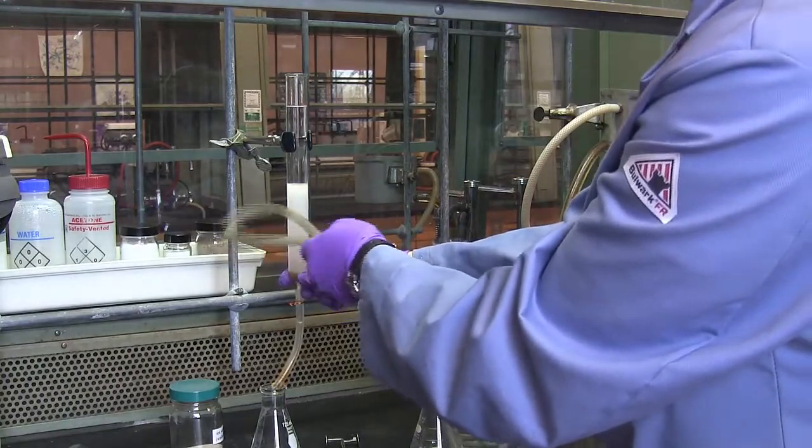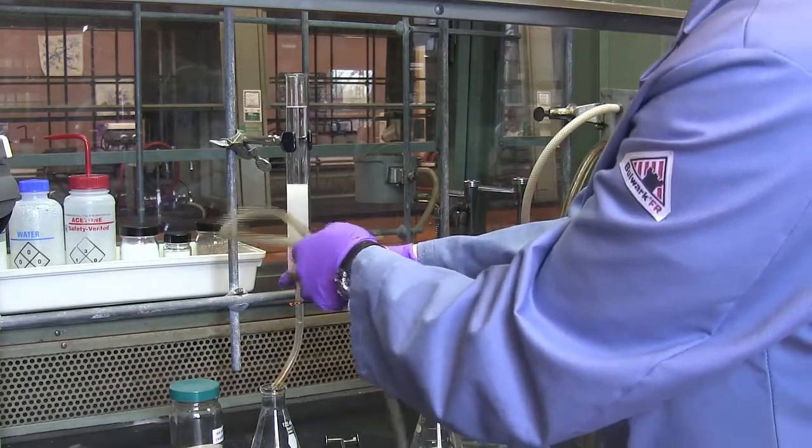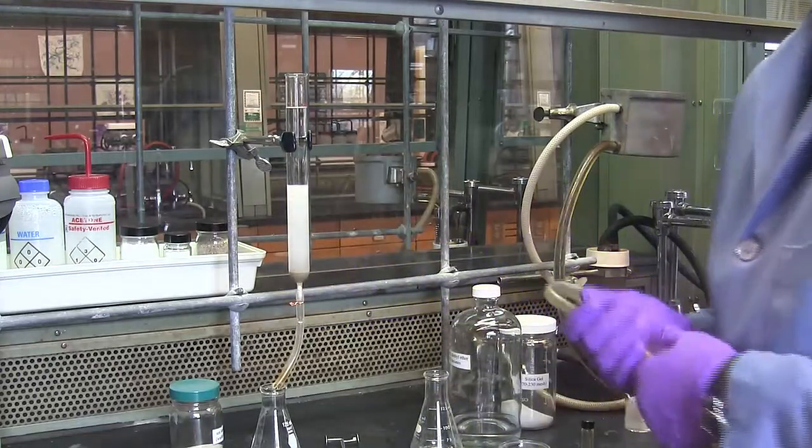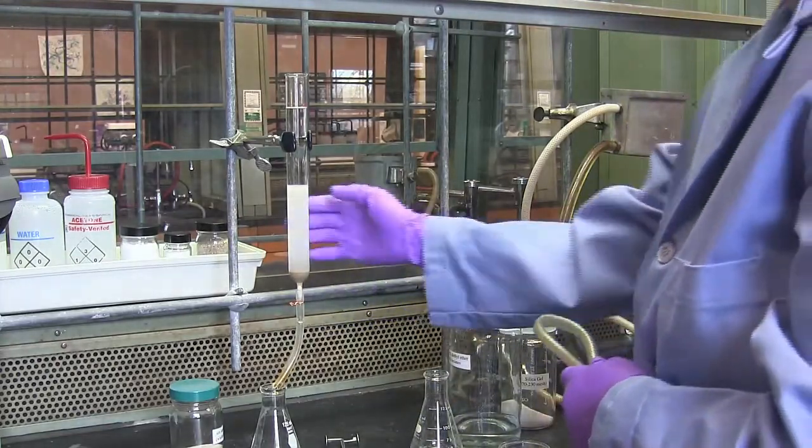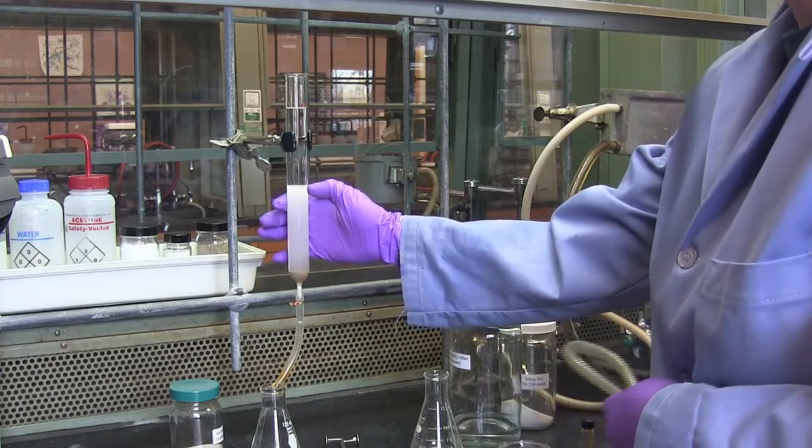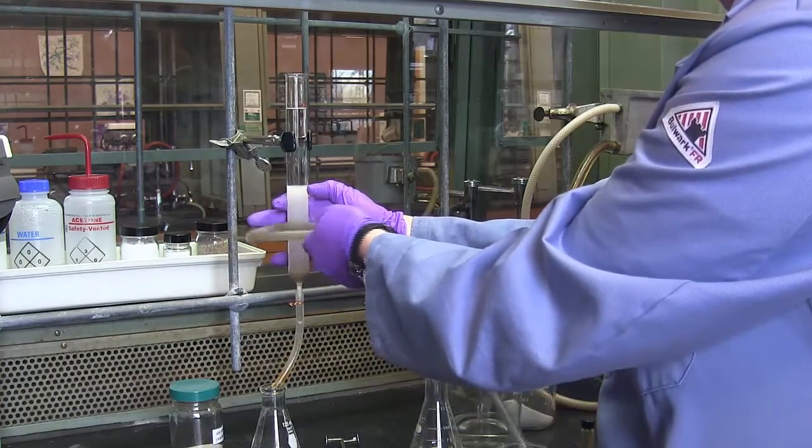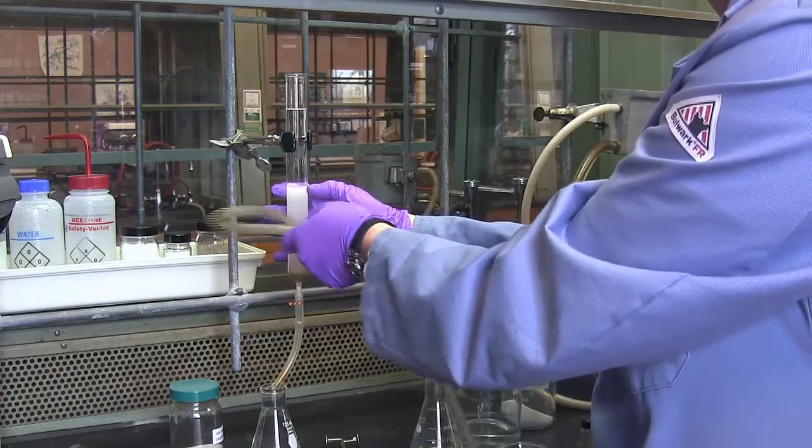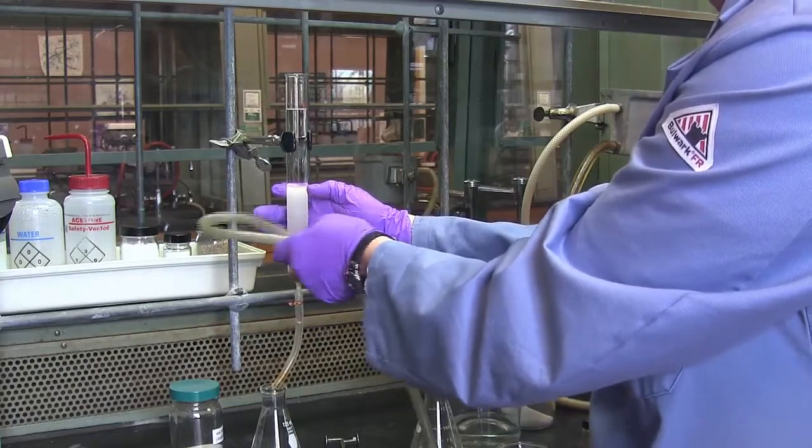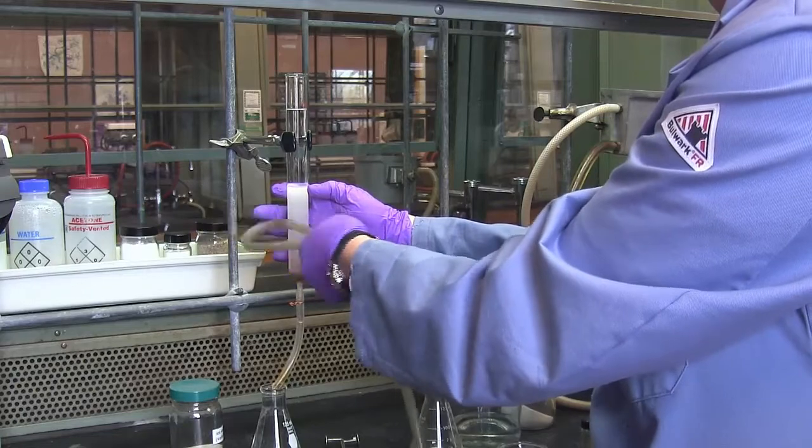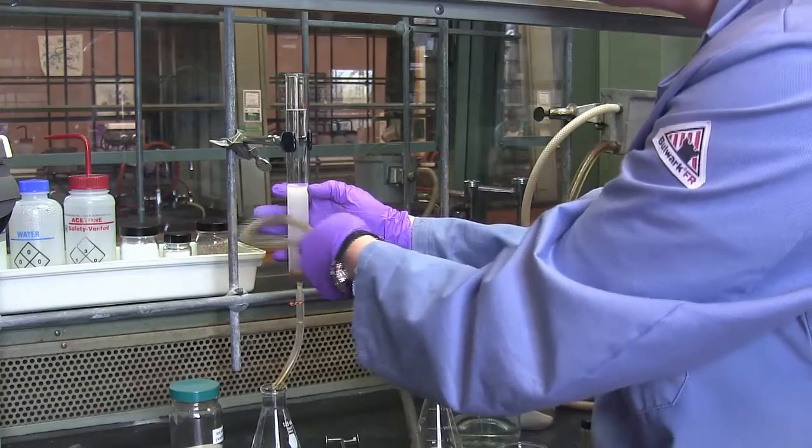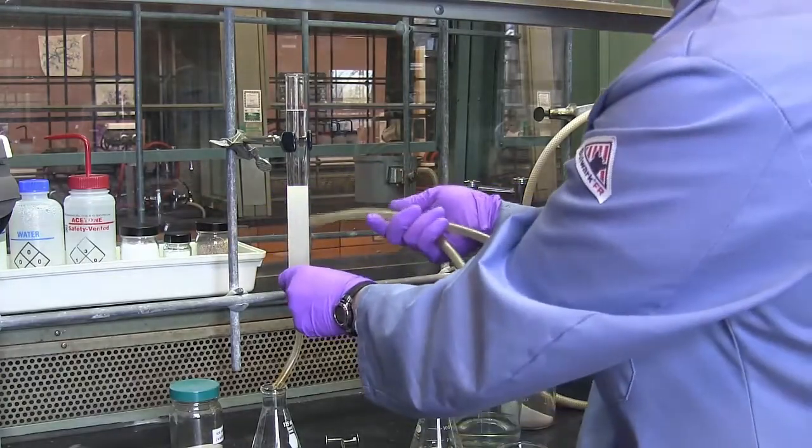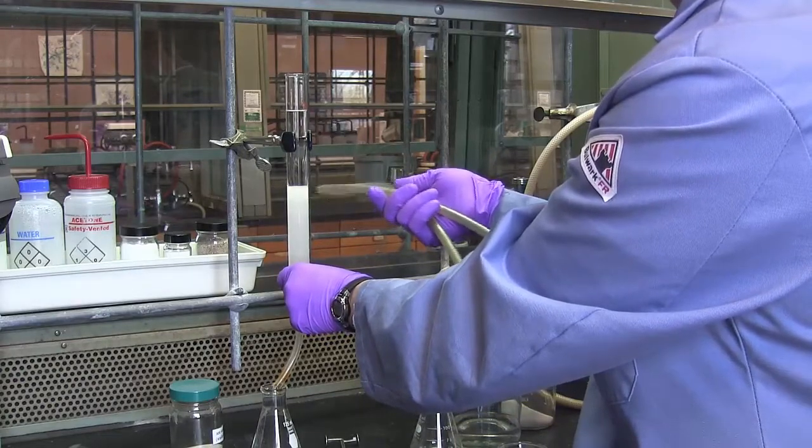It usually takes a few minutes of tapping for the silica gel to settle completely. Usually if I want to test whether or not the silica gel has settled, I'll use a finger to mark the top of the silica height. I'll tap for a few minutes, being careful not to move my finger, and then check to see if the silica gel has dropped. Usually takes a couple of minutes of tapping for the silica to settle.